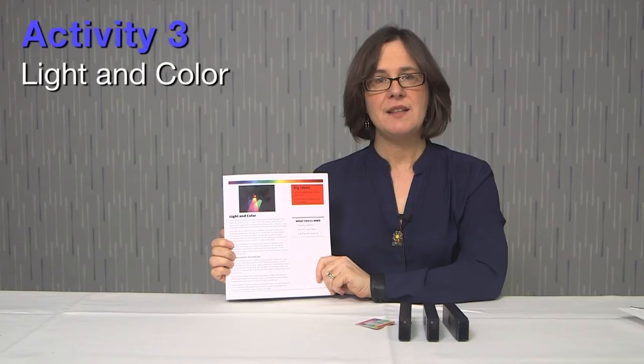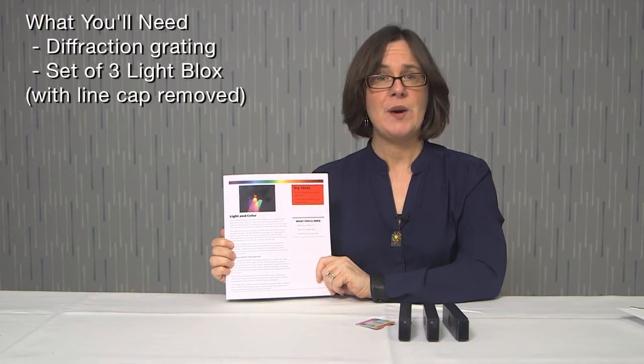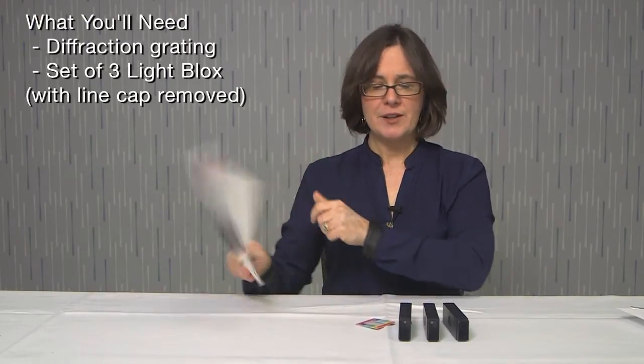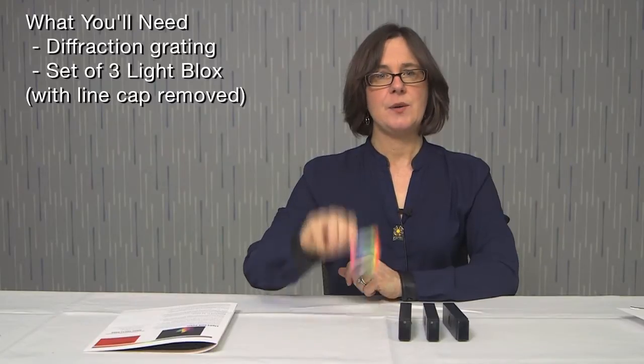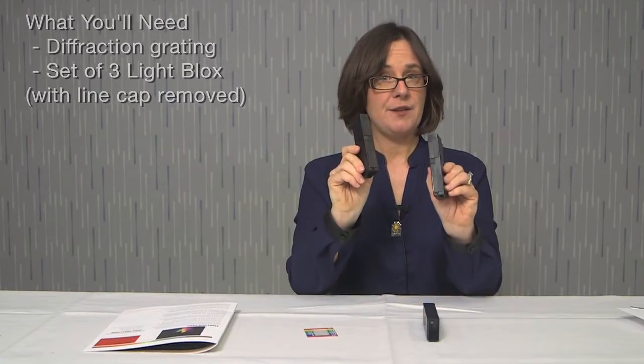Now we're going to take a look at light and color. We're going to introduce the idea that the white light that students are used to seeing is actually light that's composed of many colors, many different wavelengths of light. What you're going to need for this activity is your diffraction grating that came in your kit and all three of your light blocks with the slit caps off.